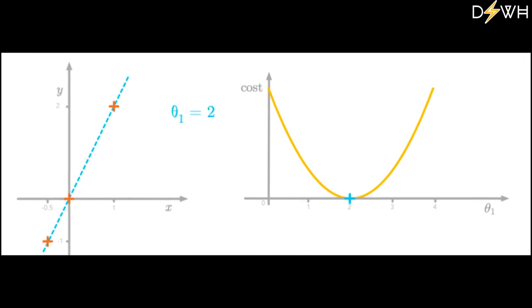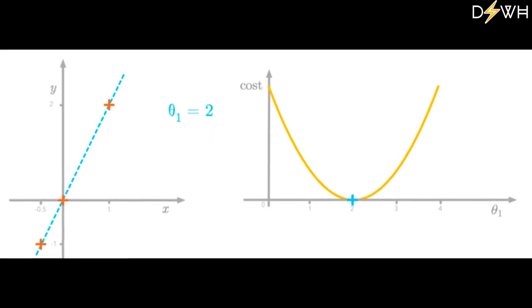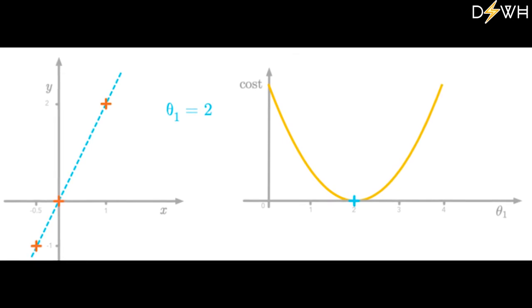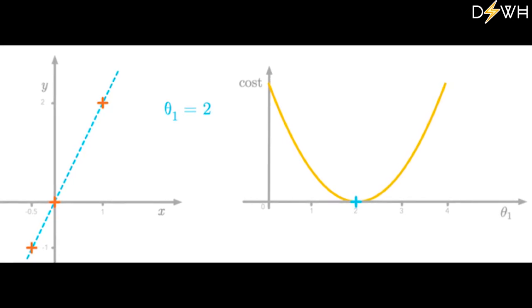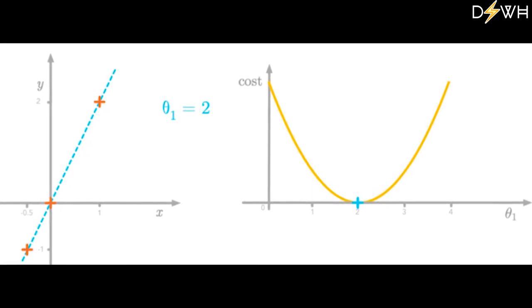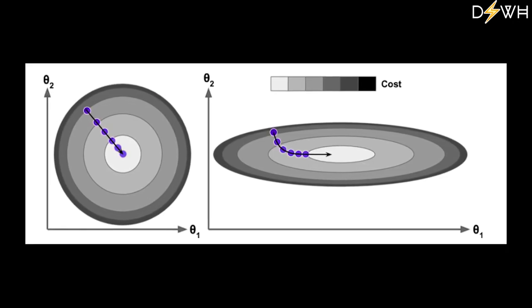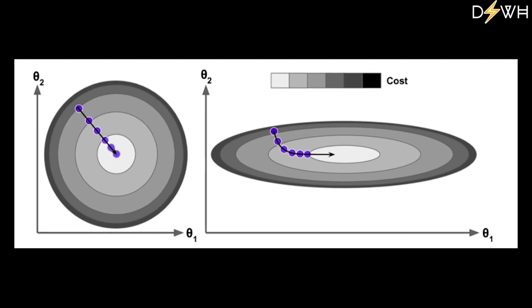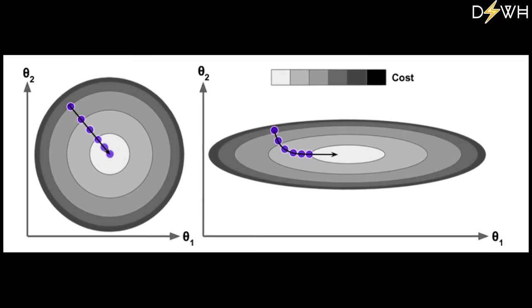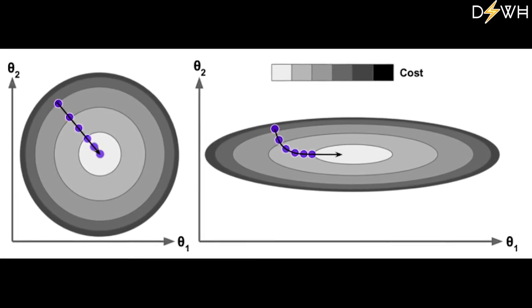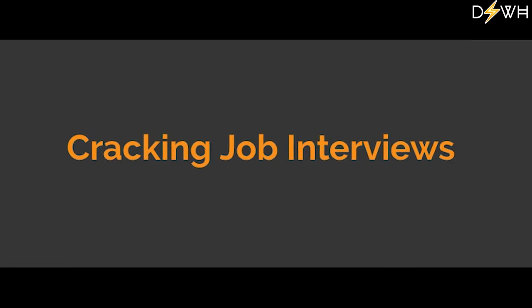Learning about the shape and math behind cost function also helps us in defining the parameters of the model. For example, while using gradient descent we should make sure that the features are scaled as it converges very slowly to the global minimum as shown in the figure on the right where the features are not scaled.